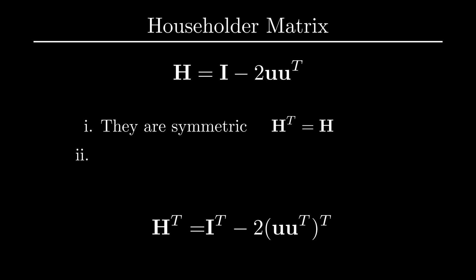As you can see, I transpose is simply just I, and then to take the transpose of a product, we can use the following property, where we swap the order of the multiplication and transpose each of the components of the product. And as you can see, we end up with the same matrix we started with. Hence, our H matrix is indeed symmetric.